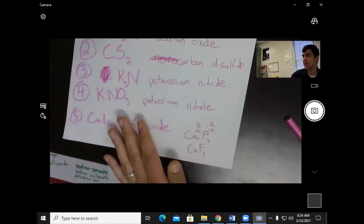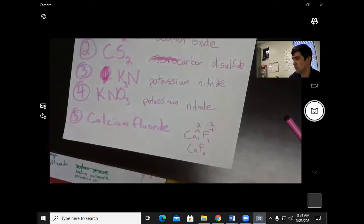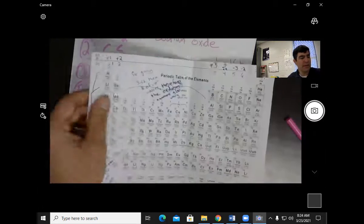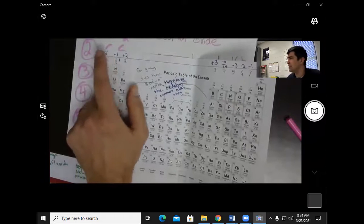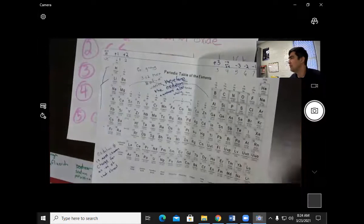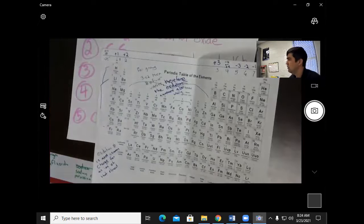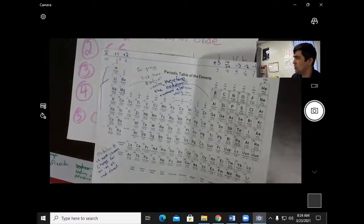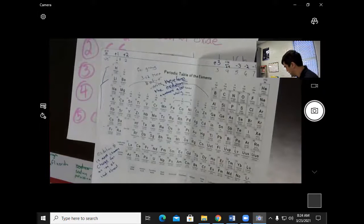And if there's no number by it, that's assumed to be how many atoms? One. And this number up here, this is the oxidation number. What does the oxidation number tell? It's the charge, the most common charge for that atom. It's the most common charge for that atom. That's what it tells. So that's the oxidation number. It tells the most common charge. Let's take our quiz.